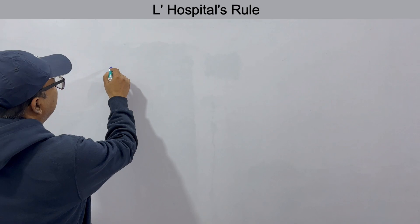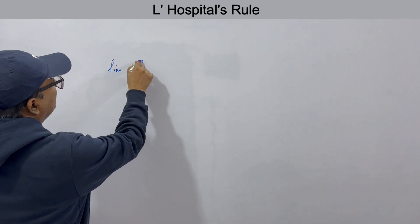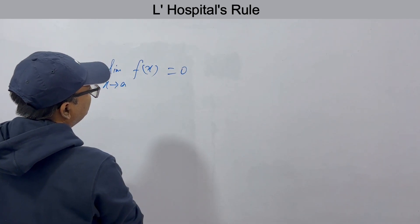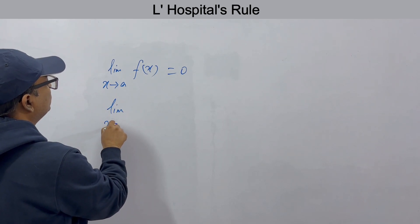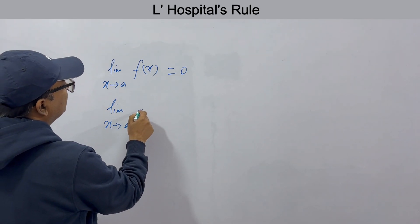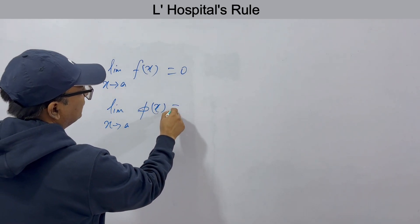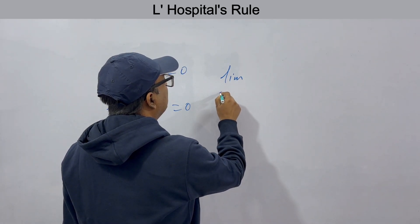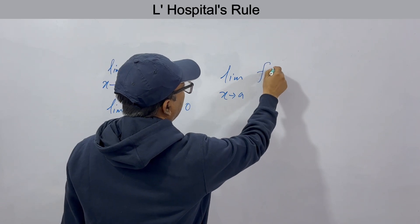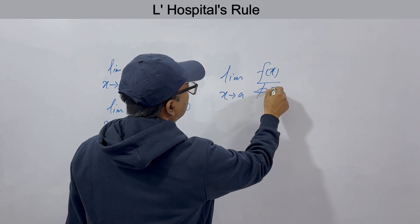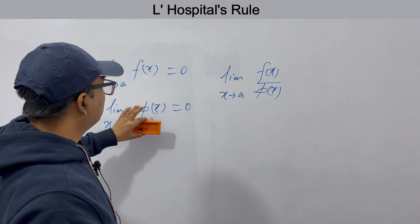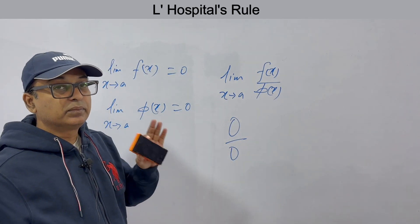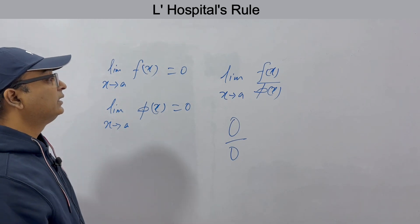Let's say the limit of f(x) when x tends to a is 0, and another function φ(x) also has a limit of 0 when x tends to a. Then if we have to find the limit of f(x) by φ(x), this will be in 0 by 0 form. You know 0 by 0 is indeterminate — in mathematics, 0 by 0 is a form which is indeterminate.